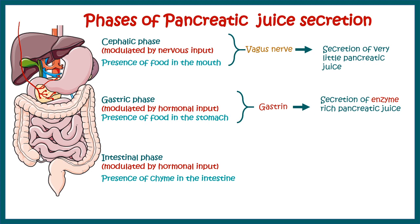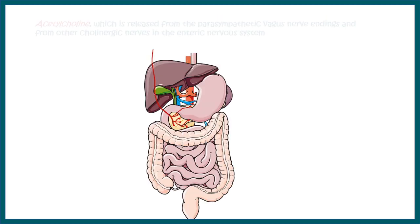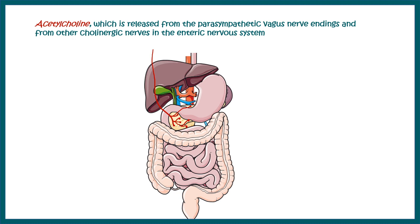In the intestinal phase, when chyme moves down from the stomach into the intestine, it leads to secretion of CCK (cholecystokinin) and secretin. This results in two things: secretion of enzyme-rich pancreatic juice — 80% of the pancreatic juice is secreted in this phase — and secretion of bicarbonate-rich pancreatic juice, making the pancreatic secretion more alkaline. At a molecular level, three factors govern exocrine pancreatic activity.